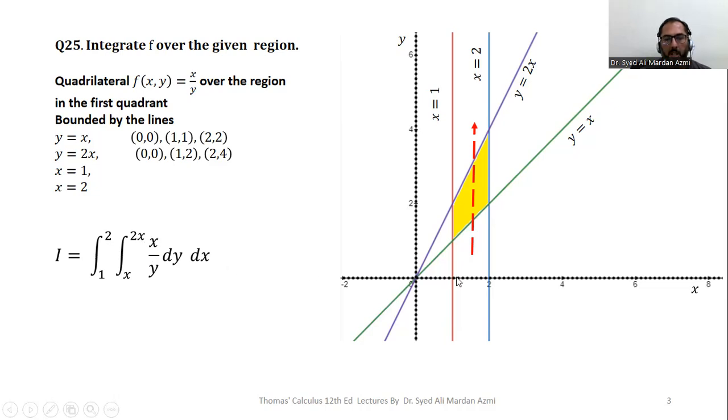For outer variable, we will see the range of our variable. For this particular region, we move from left to right and the starting value is x equal to 1 for this region and the ending value is 2 for this region. So left to right, our lower limit will be x equal to 1 and upper limit will be x equal to 2.